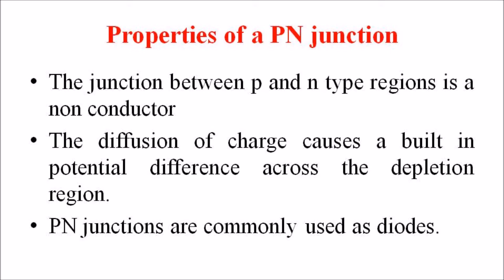The depletion layer occurs because the electrically charged carriers, that is electrons in the N-type and holes in the P-type silicon, diffuse into the other type of material and eliminate each other in a process called recombination. This diffusion of charge causes a built-in potential difference across the depletion region.